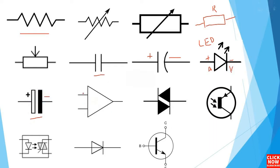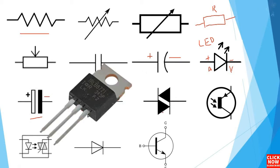Here we have the symbol for the amplifier. It has two inputs and one output — so this is an amplifier. Basically this is the triac with two diodes, as you can see — this is a triac.